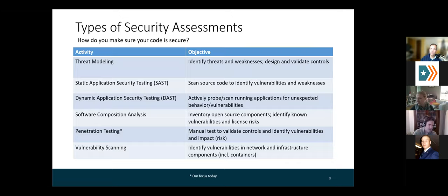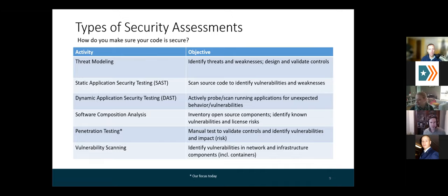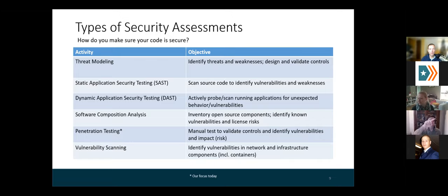In technical terms, here's how we can actually identify a lot of these threats and vulnerabilities. There are several different activities performed within a security organization. The first is threat modeling — we basically just did a high level threat model. Threat modeling is not necessarily a hands-on keyboard activity, but just whiteboarding and thinking out loud, and this is when you can identify threats and weaknesses, or design and validate controls. When talking about application security and code specifically, there are automated tools that can be used: the first is static application security testing, or SAST, which is a technique that is essentially like spell check for your code — tools that look at your source code and try to identify vulnerabilities and weaknesses without having to run it.